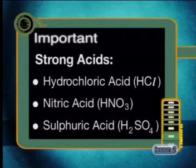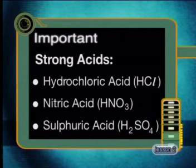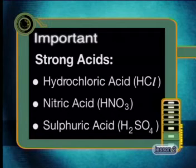Did you know that there are 3 strong acids that you need to know about? These are hydrochloric acid (HCl), nitric acid (HNO3), and sulfuric acid (H2SO4). All the other acids you will deal with at school are considered weak acids. So, for example, vinegar and lemon juice are both weak acids. You cannot do anything to make them strong.